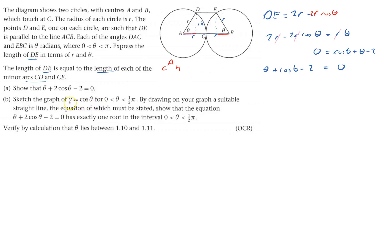Sketch the graph of that. That's cos theta, from 0 to 180 over 2—that's 90. I want the first bit of cos. That starts up here, goes up to 1, and that's pi over 2.